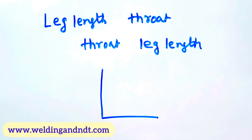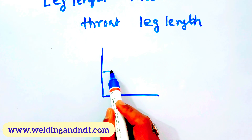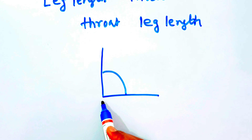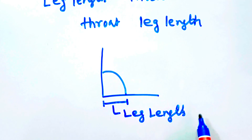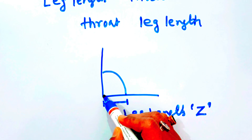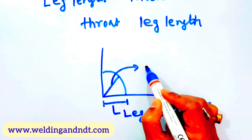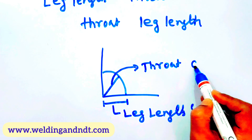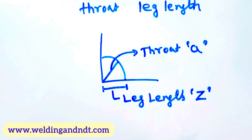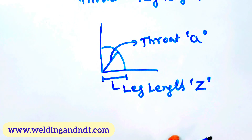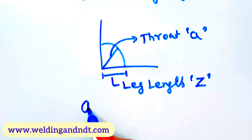Suppose this is a fillet joint. The distance from the root to the toe of the weld is called the leg length, and it is often denoted by the alphabet Z. The distance from the root to the surface of the weld is called the throat, and it is often denoted by A. So this one is the leg and this one is the throat length.